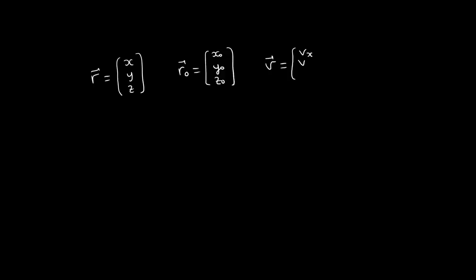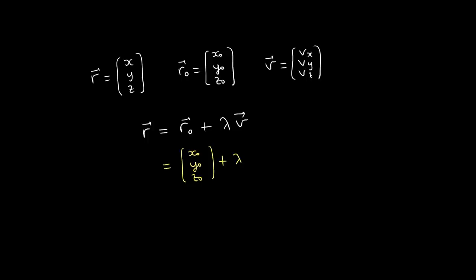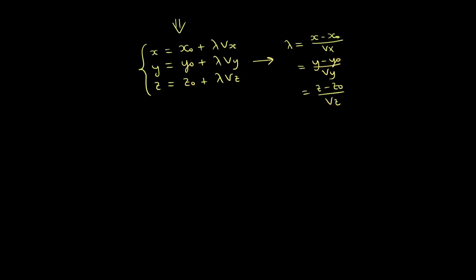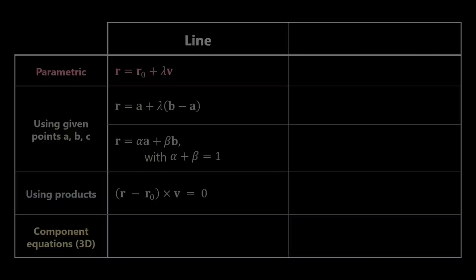Next, we can write the equations without using vector notation and instead using the components. In this case, vector r is given by x, y, z, vector r0 is given by x0, y0, z0, and vector v is given by its components. Our usual parametric equation for the line can be written as three separate equations. If we solve these three equations in terms of lambda, we can arrive at: (x minus x0) over dx equals (y minus y0) over dy equals (z minus z0) over dz. Since lambda can be any value which the three terms must be equal to, we can write the equation of a line as these simple equalities.